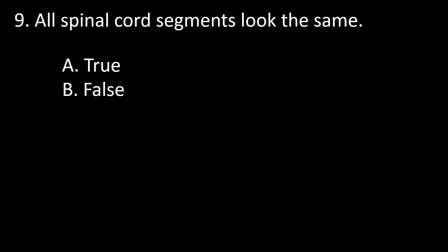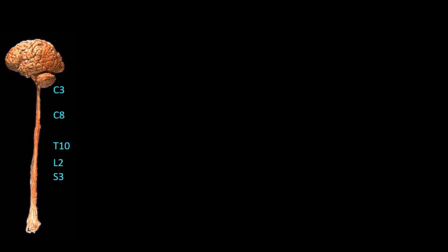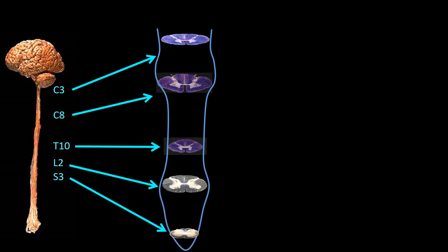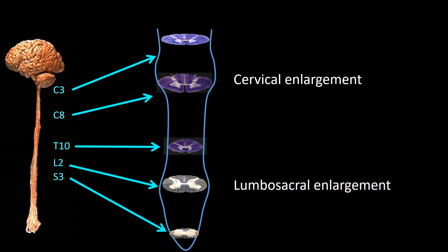Next question: all spinal segments look the same — true or false? The answer is definitely no. This is an infrequent dissection where the brain and spinal cord have been dissected in one piece. Various spinal cord levels are indicated, and the corresponding specimens inside a schematized spinal cord show the cervical enlargement and the lumbosacral enlargement. We will use this figure to point out the characteristics present at different spinal cord levels.